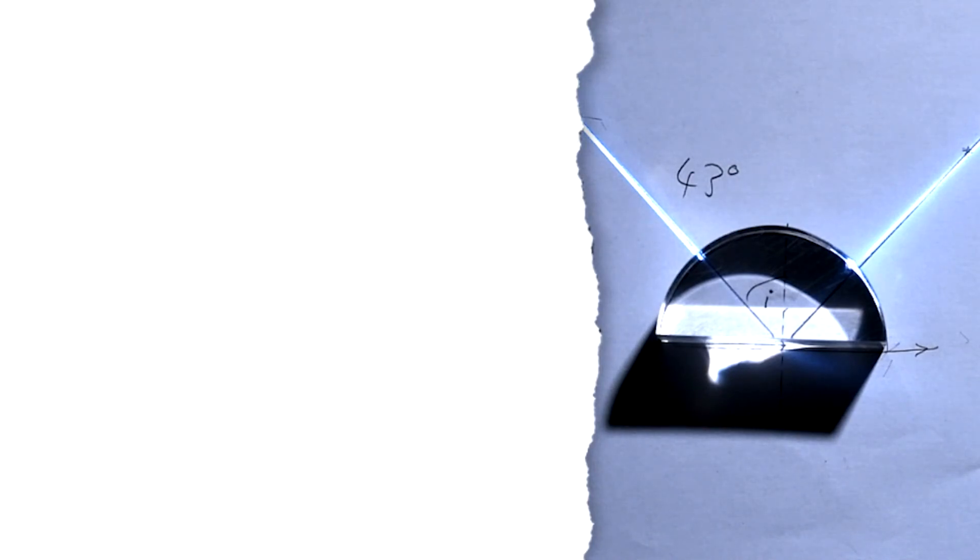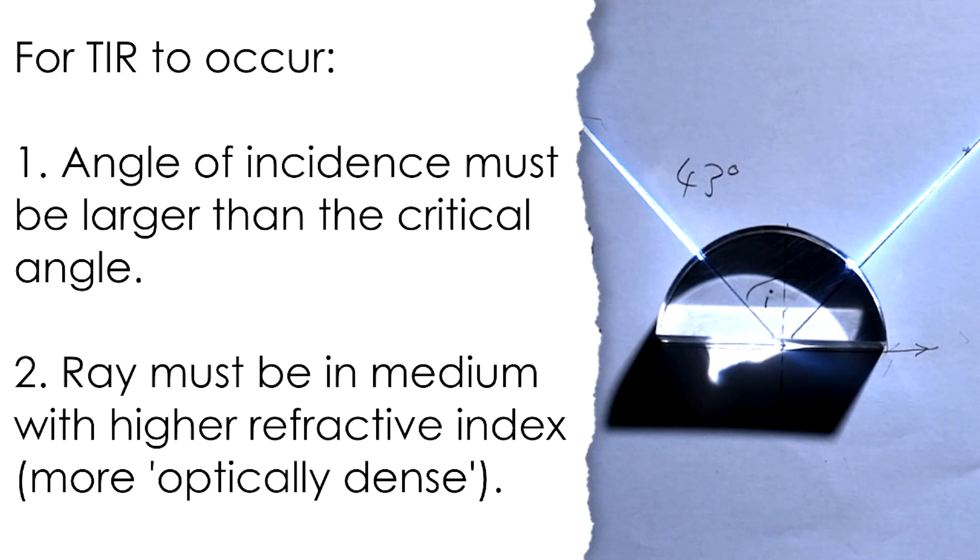So, we need the angle of incidence to be greater than the critical angle, but we also need the light ray to be in the material, also known as the medium, that has the higher refractive index. Or we could say the more optically dense medium.